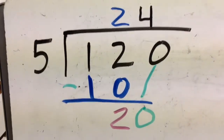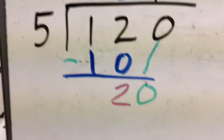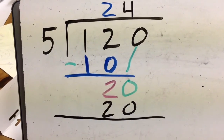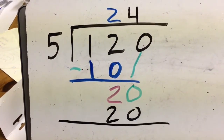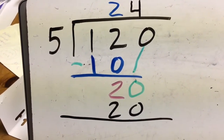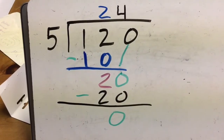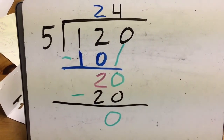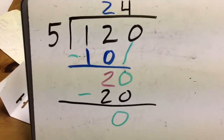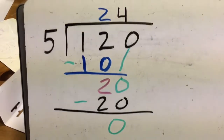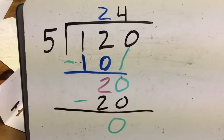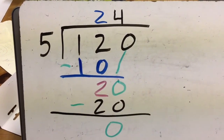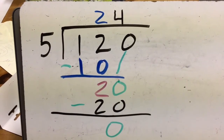I take four times five and write it under the 20 — four times five is 20. Now I subtract: 20 minus 20 equals zero. There's no remainder. I used all my numbers — I took care of my one, my two, my zero. The answer is 24. How many fives are in 120? Twenty-four. 24 times five is 120.